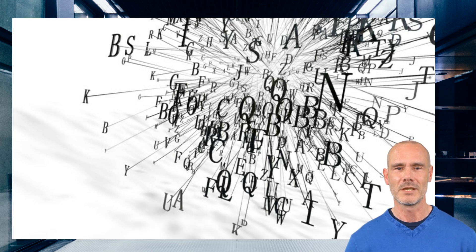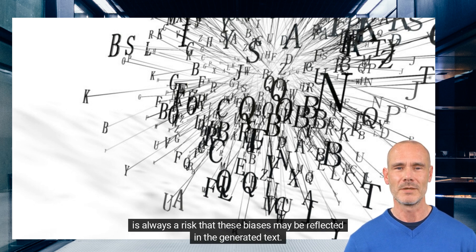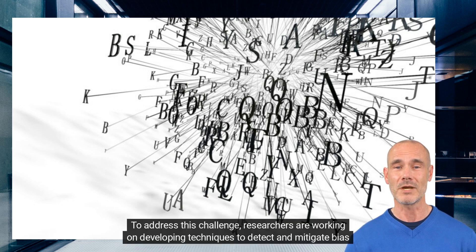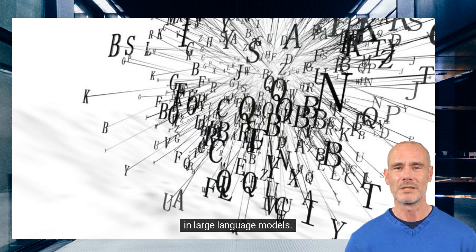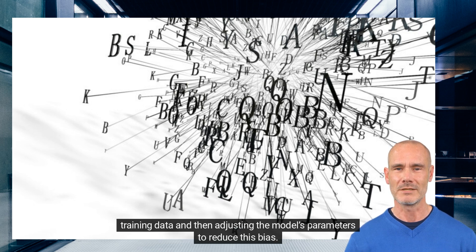Another challenge is ensuring that these models do not perpetuate harmful biases or stereotypes when generating text. Because they learn from data generated by humans who may have their own biases or prejudices, there is always a risk that these biases may be reflected in the generated text. For example, one approach involves using statistical methods to identify patterns of bias in the model's training data, and then adjusting the model's parameters to reduce this bias.